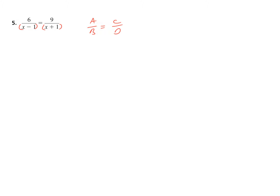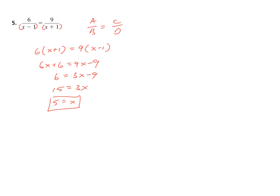Product AD would be 6 times quantity X plus 1. Product BC would be 9 times quantity X minus 1. You're pretty well assured that you're not going to get any X squared term — no quadratic methods needed. Distribution, isolate, done. So 6X plus 6 equals 9X minus 9. Subtract 6X from both sides: 6 equals 3X minus 9. Add 9 to both sides: 15 equals 3X. Multiplying through by one-third, I get 5 equals X.